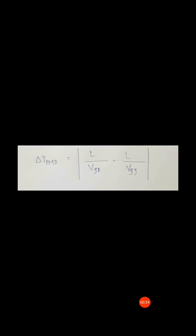Polarization mode dispersion is characterized in terms of the mean value of the differential group delay. The equation is: delta τ_PMD ≈ D_PMD × √L, where D_PMD is the average polarization mode dispersion parameter measured in picoseconds per root kilometer.